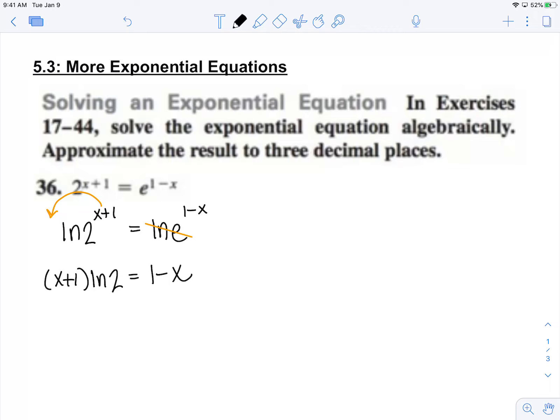Now I need to get all of my x's on one side. The first thing I'll do is distribute this ln 2. x ln 2 plus ln 2 equals 1 minus x.